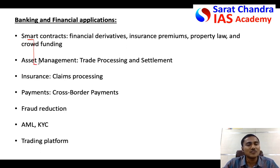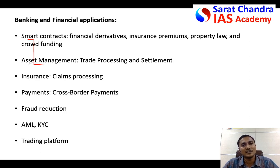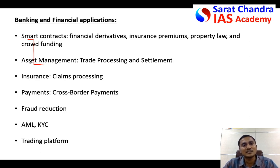Asset management involves several parties — the middleman, the banker, the manager, and others — and the data kept with each party can differ, leading to corruption. Instead, blockchain technology can be used to maintain the same data copy consistently across all parties involved in asset management.